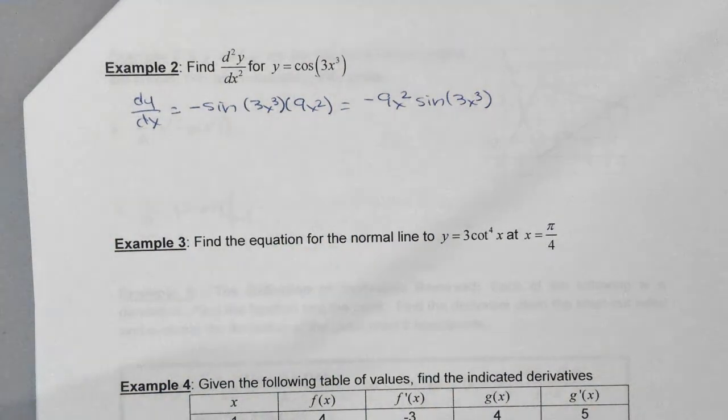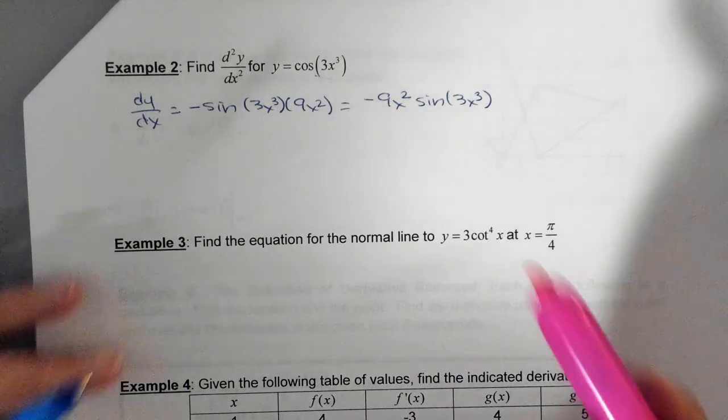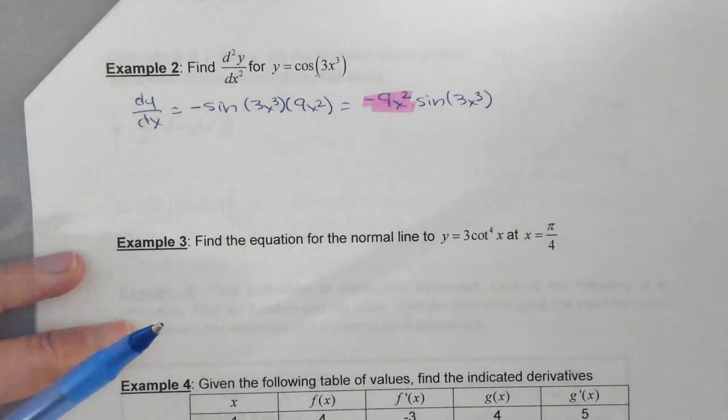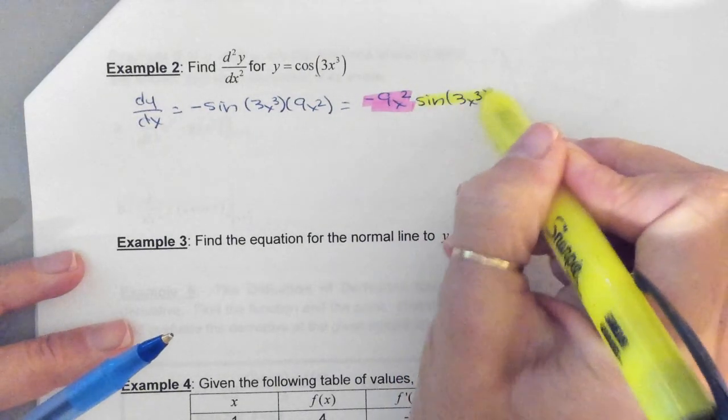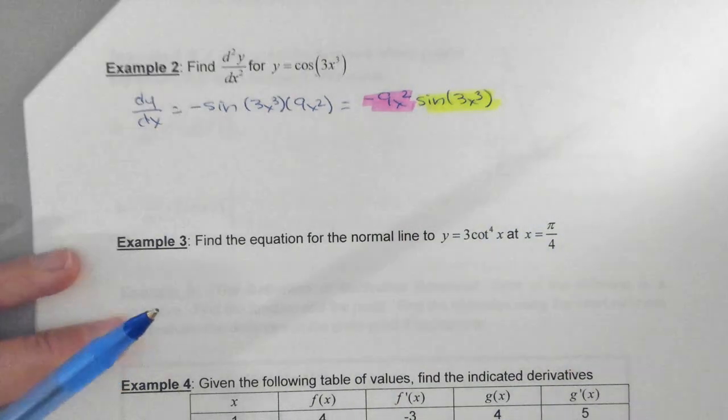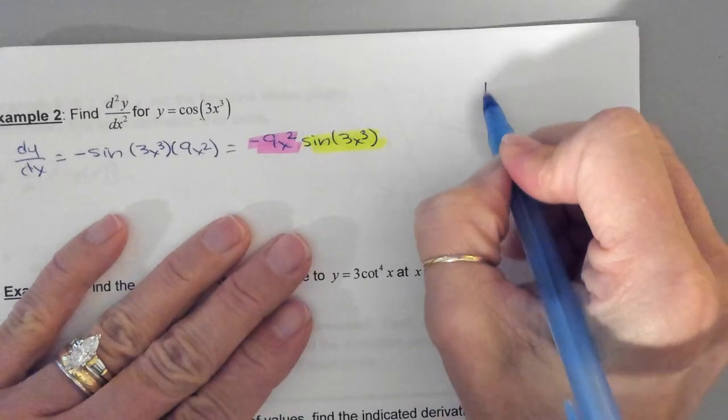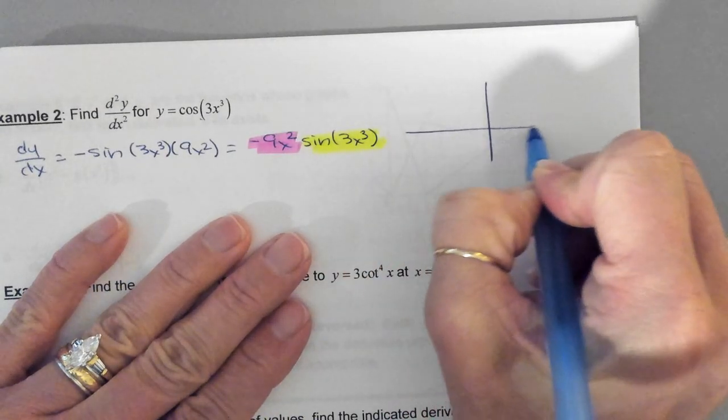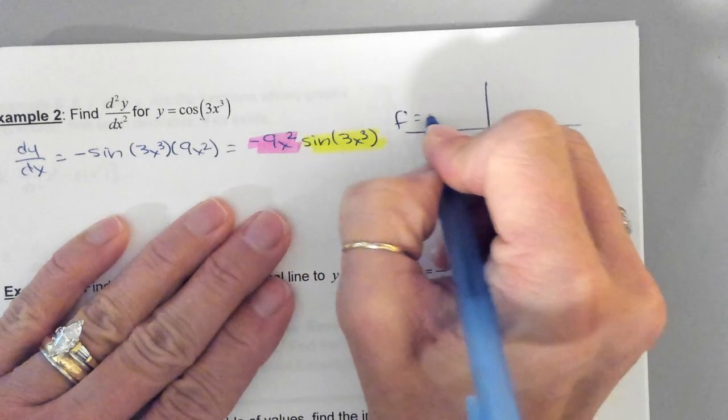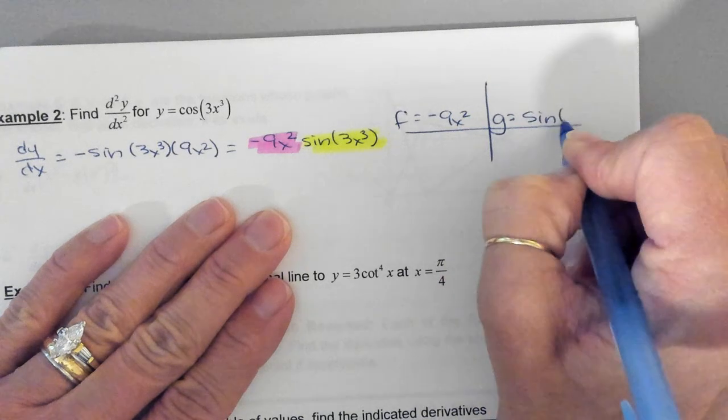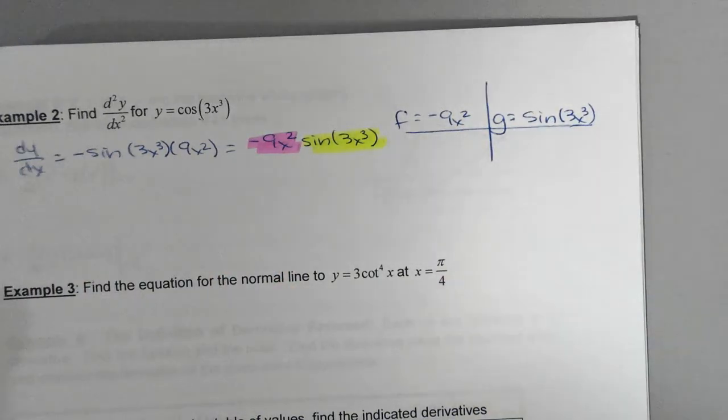So we have our two terms here. Does everybody see them? We've got this one right here, we've got this one right here. So we need to use the product rule to get the second derivative. So I need to create this table. We've got f is equal to negative 9x squared, and g is equal to the sine of the quantity of 3x cubed. Everybody okay with that?